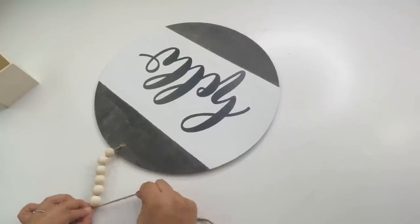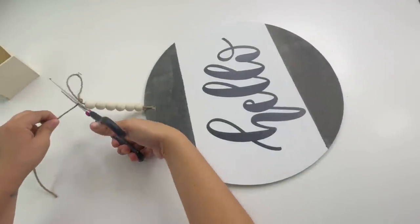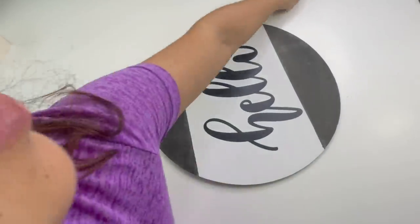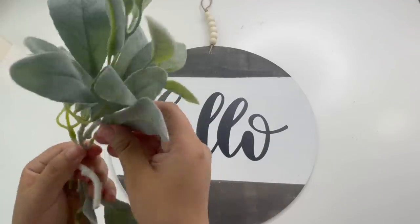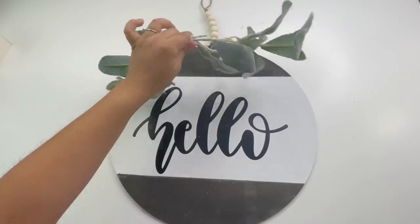For the greenery, I will be using some of these lens or ears limbs. I don't know, but I got this from Walmart. Now I'm not going to glue these. I'm going to use my electric stapler instead, so I can staple these.